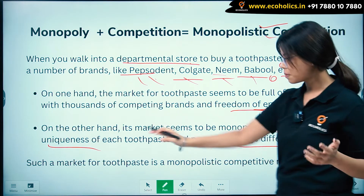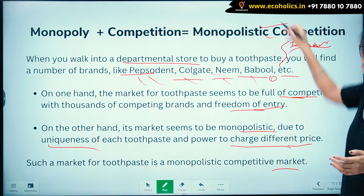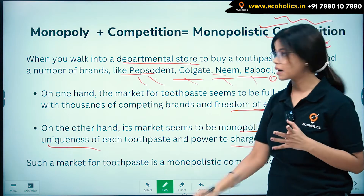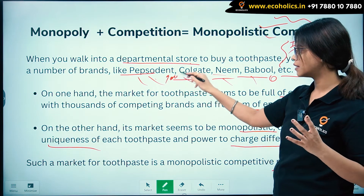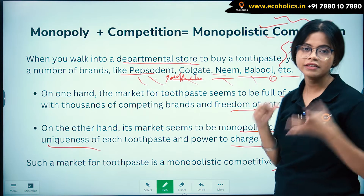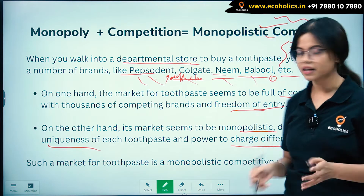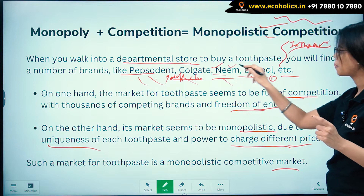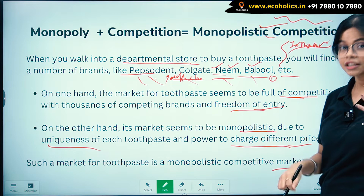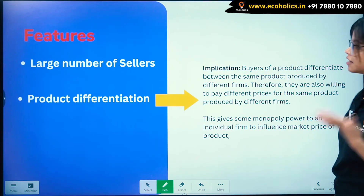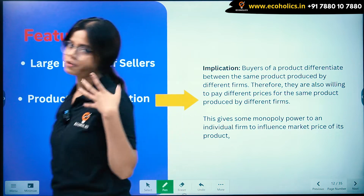Such a market for toothpaste is a monopolistic competitive market. Other examples include soap, shampoo, and chocolate — any product category with multiple differentiated brands. Now let's move further and understand the features of monopolistic competition.